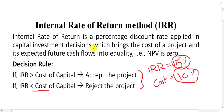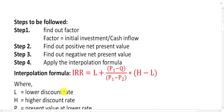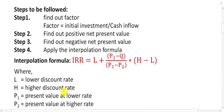The IRR is simply the rate of return which shows the profitability of the project in percentage terms. It is the rate at which the inflows equal the outflows of the project, or the rate at which the NPV of the project equals zero. The decision rule: if IRR is greater than cost of capital, accept; otherwise reject. Now, how do we calculate the IRR?